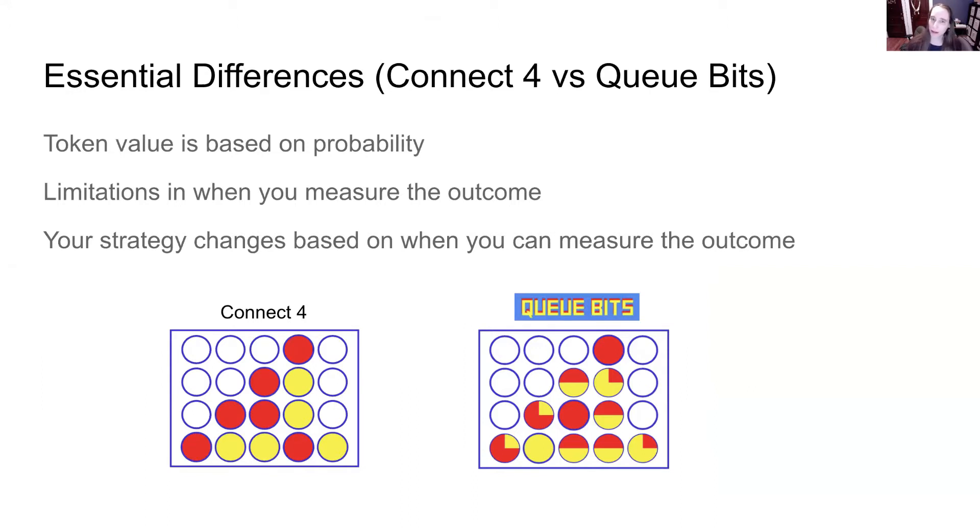But if you don't get to measure until the very end of the game, then as you're placing tokens, you still don't know the outcomes. And so you have to make a lot of different trade-offs.